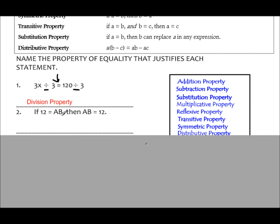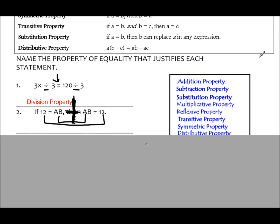Number 2: we have 12 equals ab, then ab equals 12. What we've done is flipped it around. Remember what I said — if you have the word 'then,' you can think of it as your line of symmetry. If you were to fold on that line, the ab would fall on top of the ab and the 12 would fall on top of the 12. So because these are symmetric to each other, this is the symmetric property.